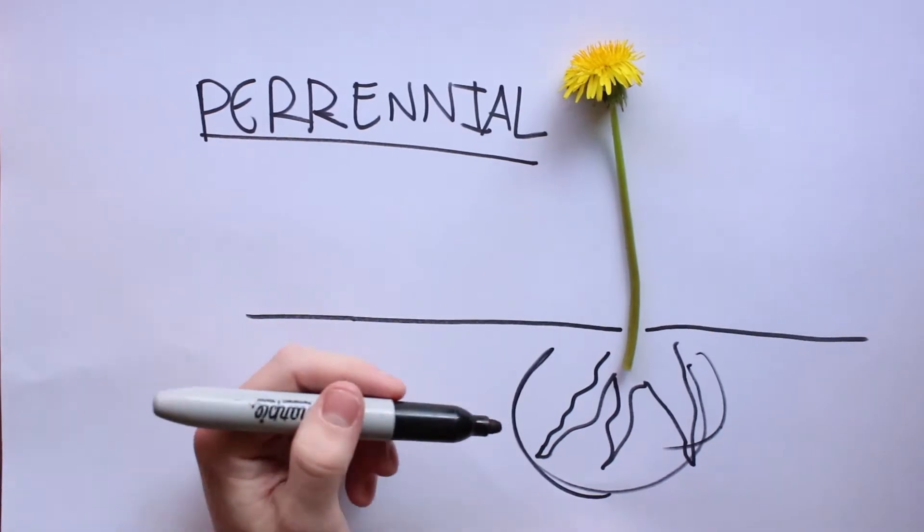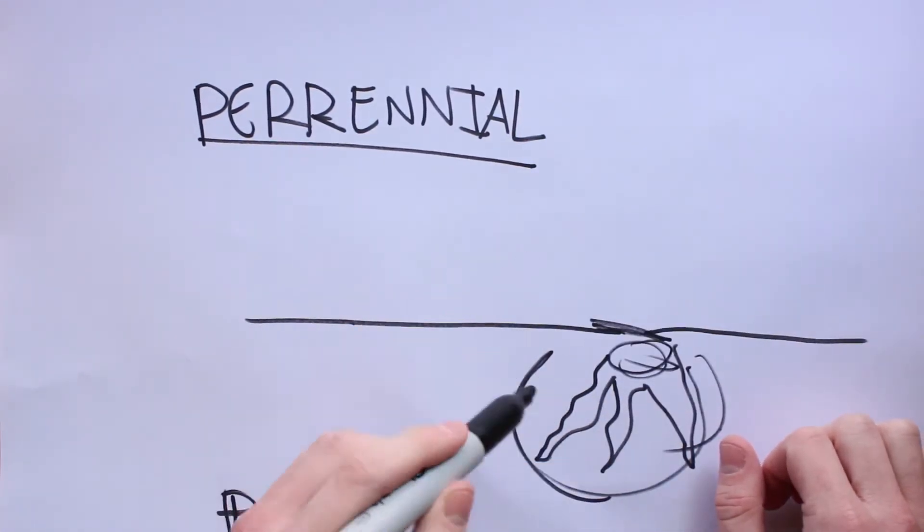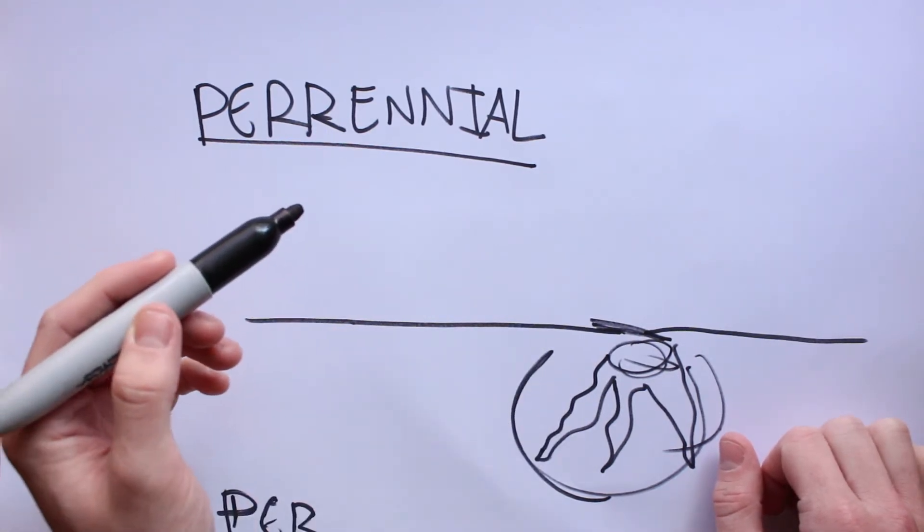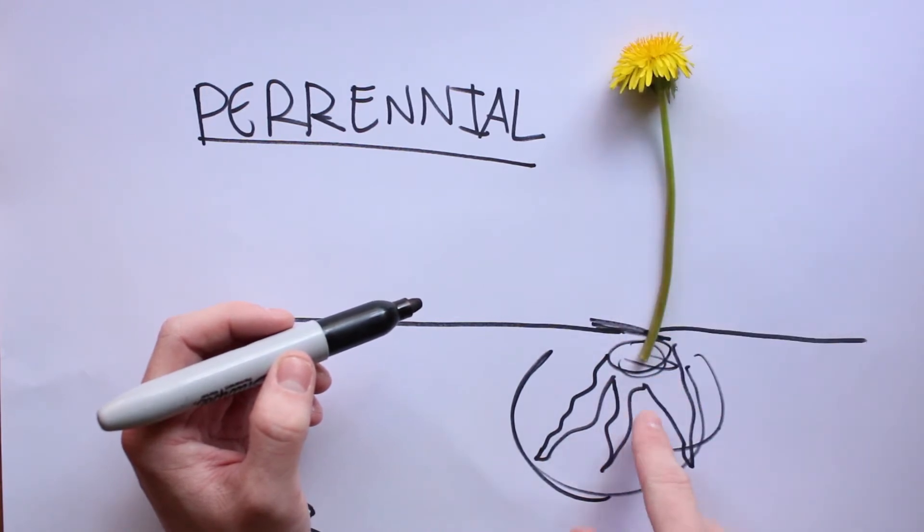It's called a taproot. This is here forever. It dies, it's winter time, it's autumn time, and then oh look, it's springtime. It's time for the flower to come back. It emerges out of this thing again.